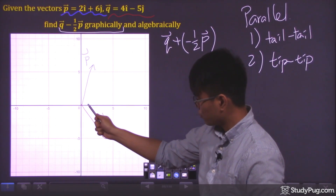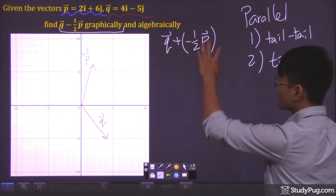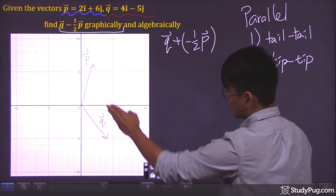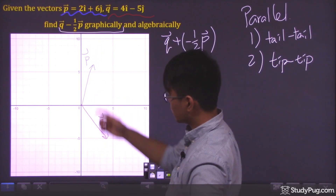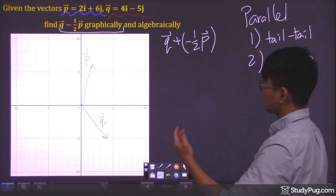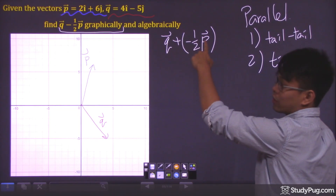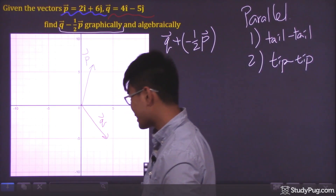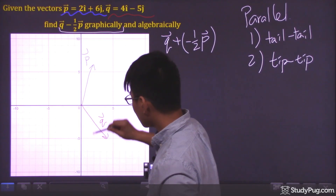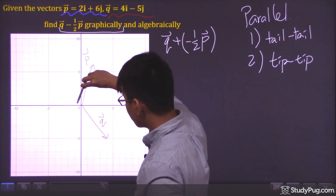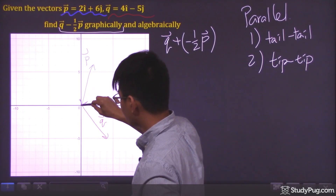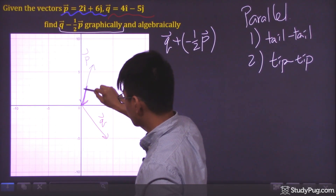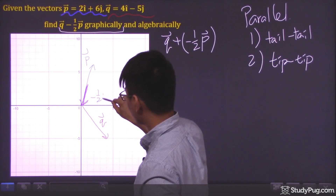Vector q doesn't need to be altered. But for the other part, we first need to flip the direction of vector p — right now it's pointing one way, so it's going to point in the other direction. Then we need to scale it down by the scalar one half. So I'm going to draw a new vector in purple: we flip the direction and make it half the size of the blue vector. This here is our negative one half vector p.